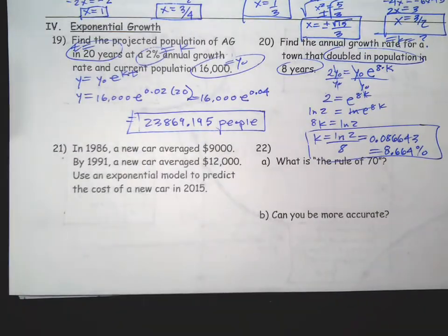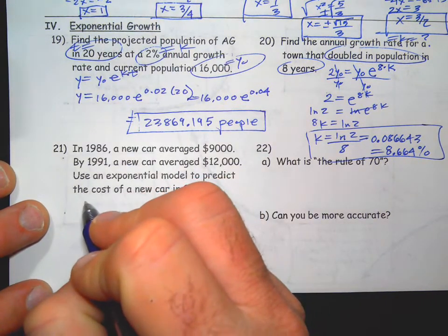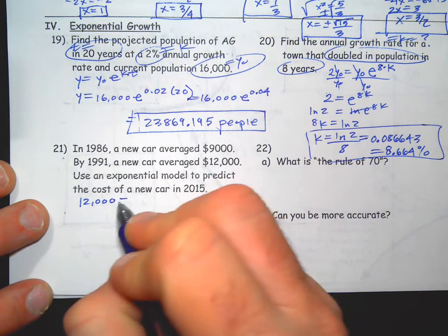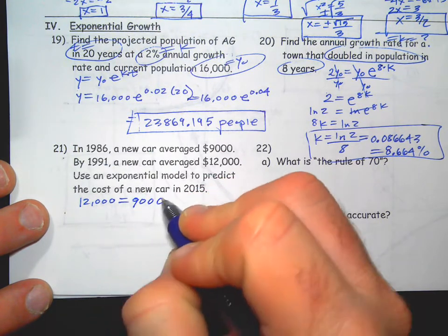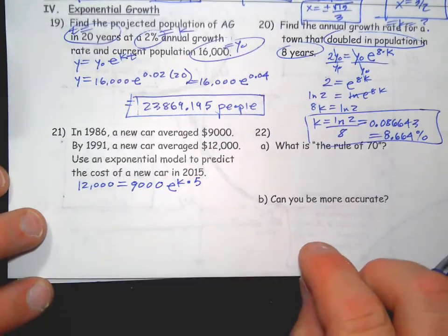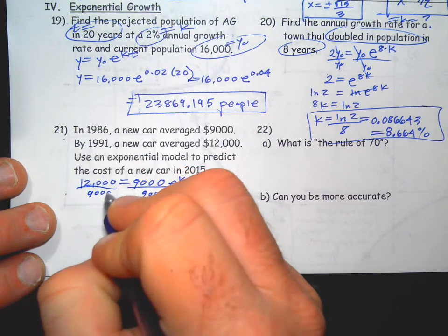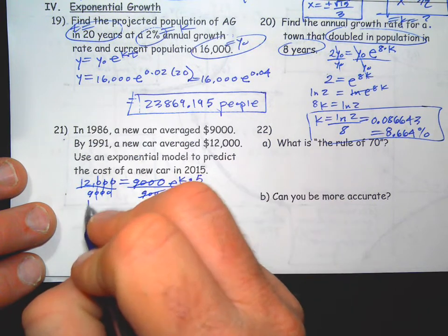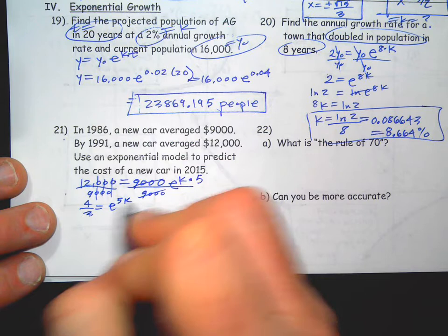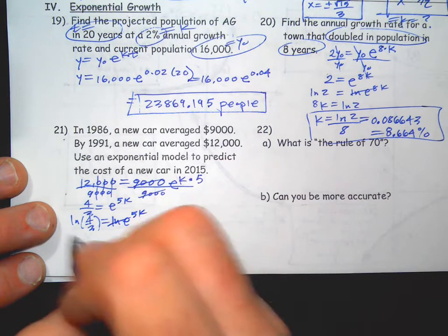21: In 1986, a new car averaged $9,000. In 1991, a new car averaged $12,000. Use an exponential model to predict the cost of a new car in 2015. We know how much it costs in 1991, and we'll say it started at $9,000 in 1986, since e to the k times, you know how many years have passed - five years have passed. So you can use the two known values to figure out what k is. We divide by $9,000 and we get 4 thirds, and we take the natural log of both sides and we solve for k.